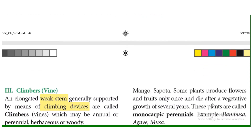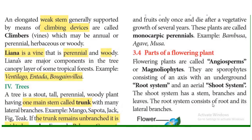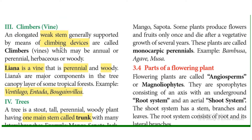Next, climbers. Climbers are plants with weak stems that are generally supported by means of climbing devices. The plant uses climbing devices to grow upward in various directions. This is a type of climber called a liana.